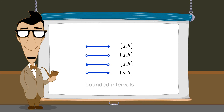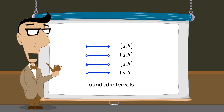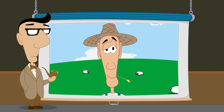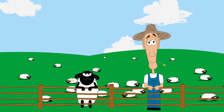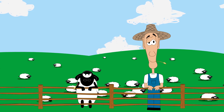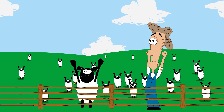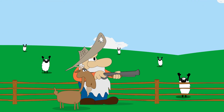Bounded intervals are also called finite intervals since their endpoints limit them to a finite length on the number line. Endpoints create bounds for an interval in the same way that a fence creates a boundary for a plot of land. Just as an interval may or may not include its endpoints, a plot of land may or may not include a fence which creates its boundary.